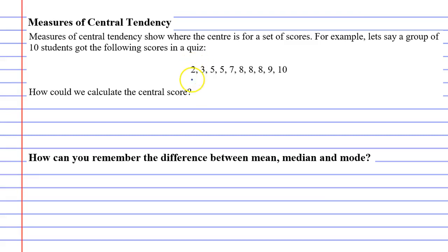Here we see that the lowest student got 2 out of 10 and the top student got 10 out of 10, or 100%. So how could we calculate the central score?